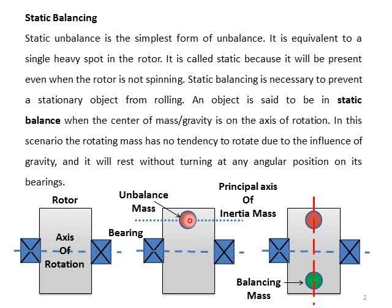To balance it, we need a balancing mass placed 180 degrees opposite, at the same location as the unbalanced mass. If we place a balancing mass 180 degrees out from the unbalanced mass, the centrifugal force produced by the balancing mass and the centrifugal force produced by the unbalanced mass will cancel each other, and the rotor will no longer rotate in the absence of any external forces.